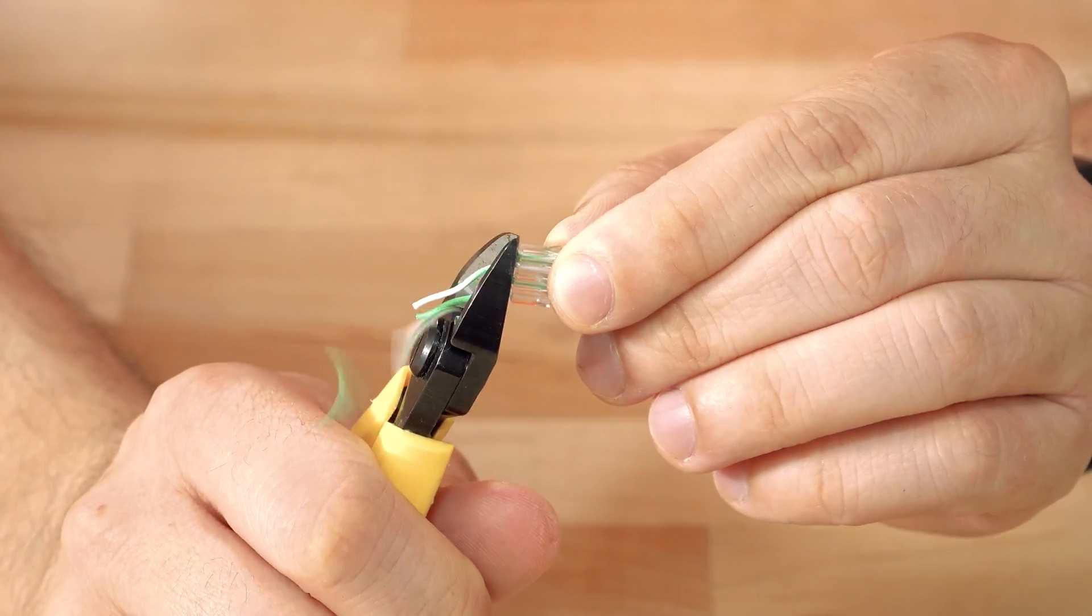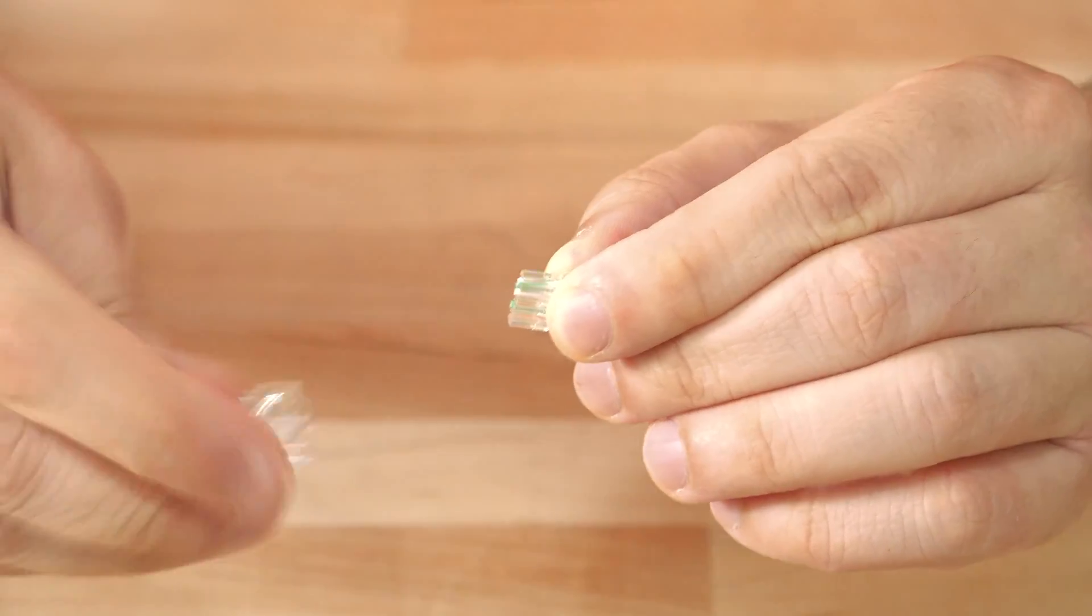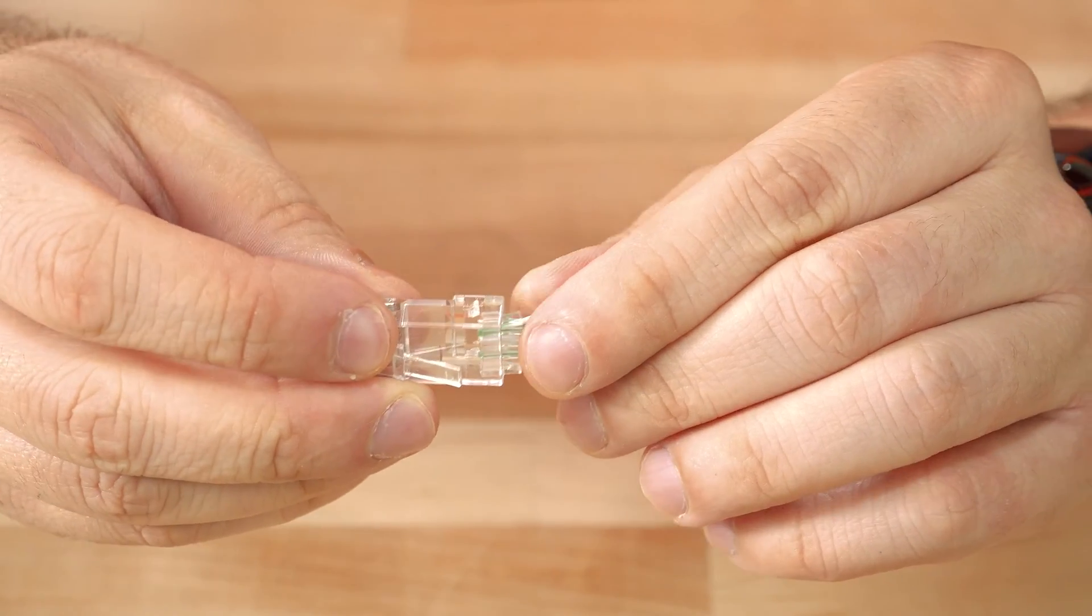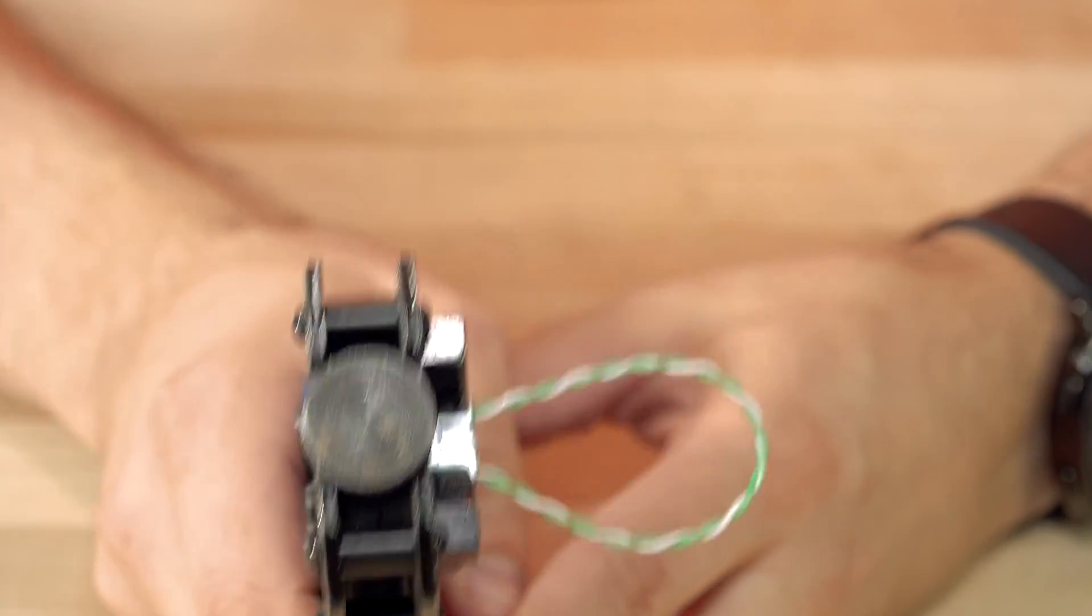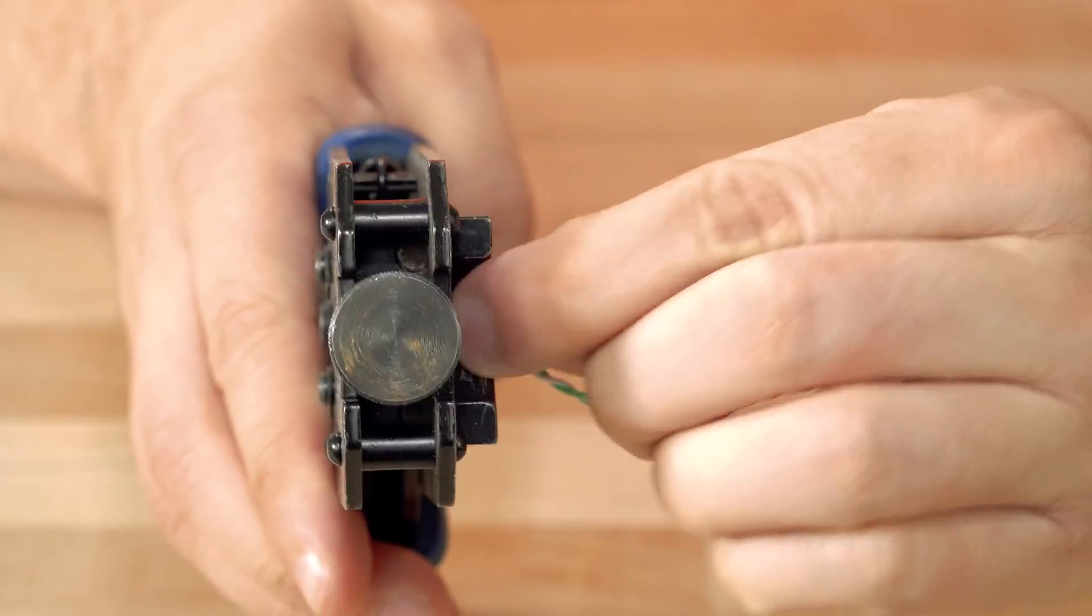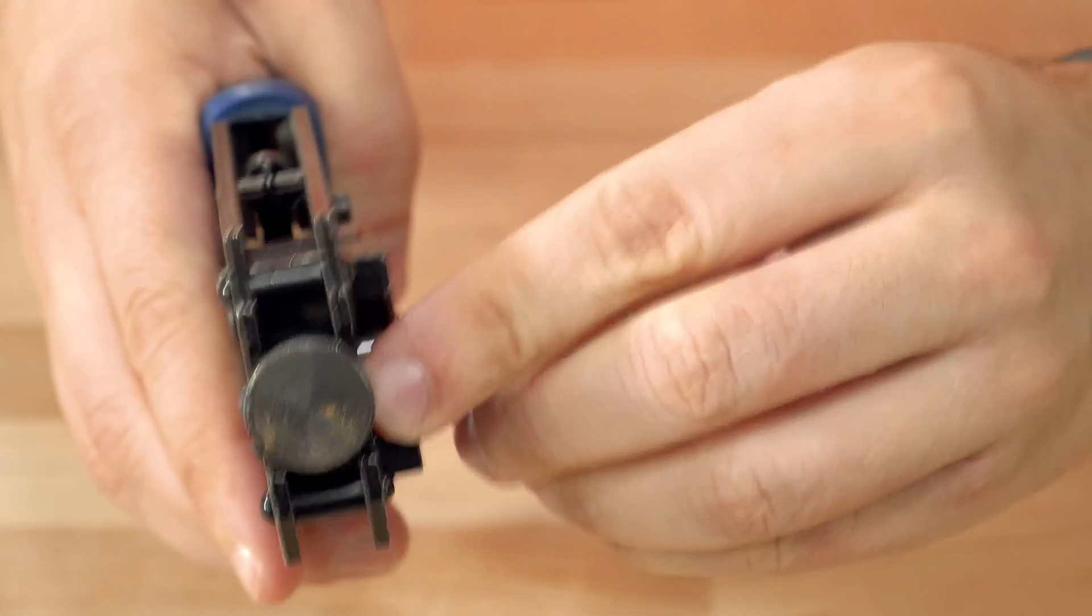Grab your trimmer. Trim it up so it's nice and flush. Load it into your connector. Grab your crimp tool. There we have it.